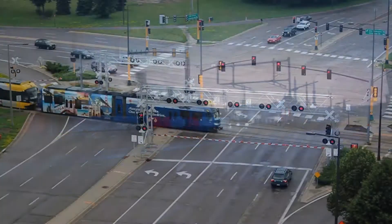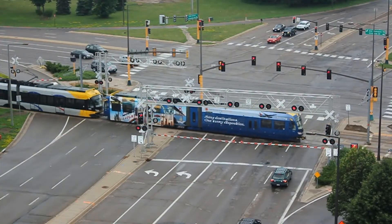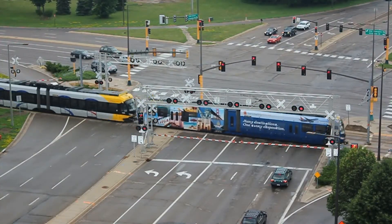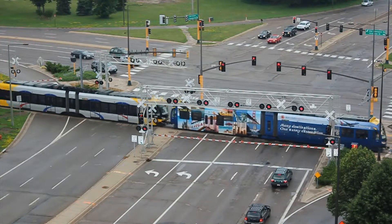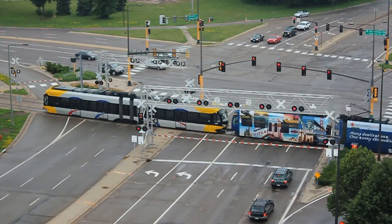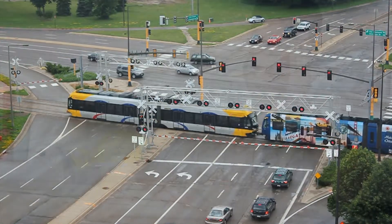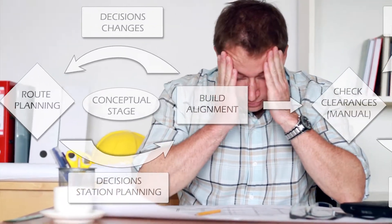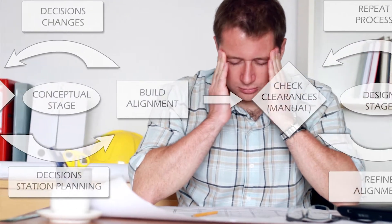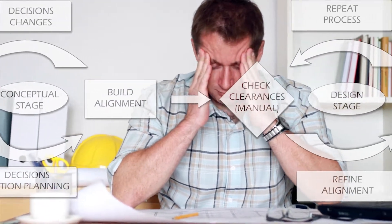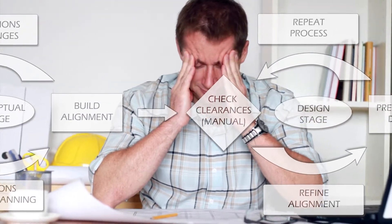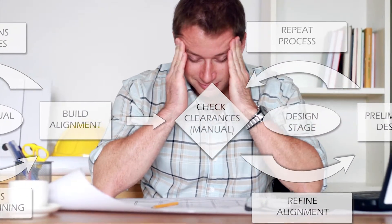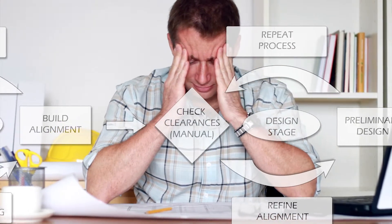When designing a light rail track alignment, engineers are required to analyze and visualize clearances of the light rail vehicle in its proposed alignment. This is a very manual and time-consuming exercise, and if changes are made, the process is repeated, wasting valuable time, energy, and money.